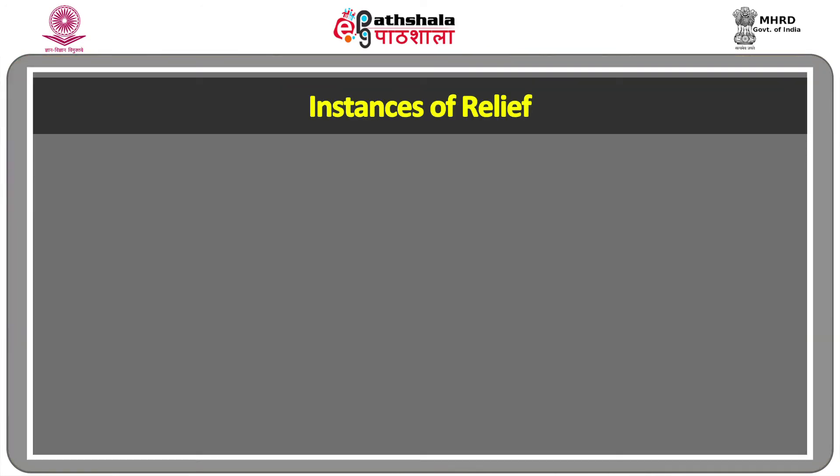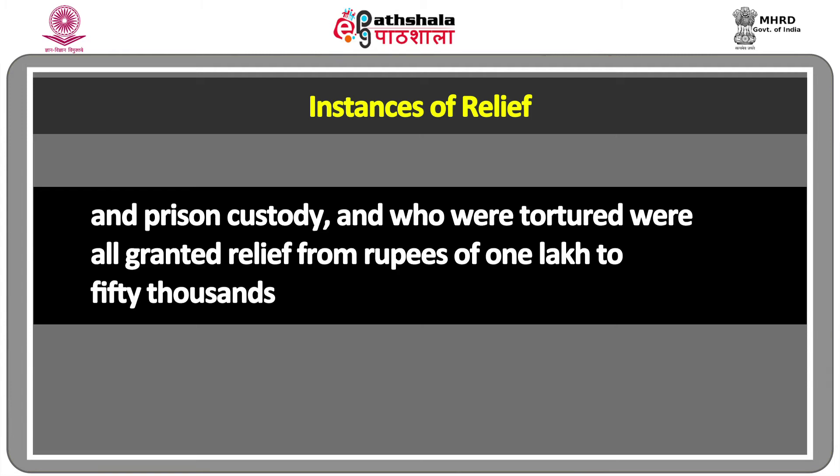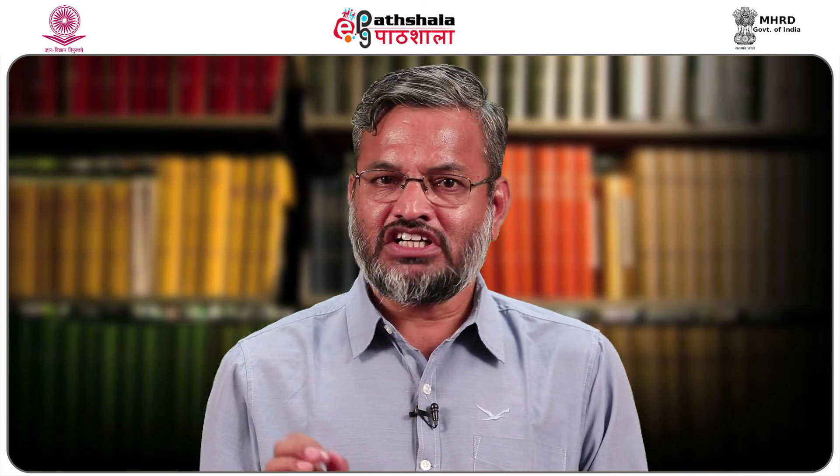The Commission has been granting compensation to victims of custodial violence and deaths. Accused who died in police and prison custody or who were tortured were granted relief ranging from rupees one lakh to fifty thousand. A careful examination of records revealed that the Commission is taking two to four years after institution of a complaint to dispose of cases. The grant of compensation is further delayed by state governments in many instances, and the quantum of compensation and delay in disposal of cases need a fresh look given the gravity of human rights violations.